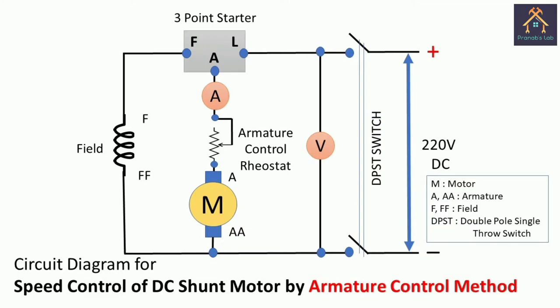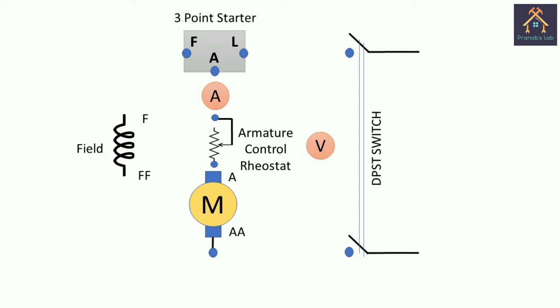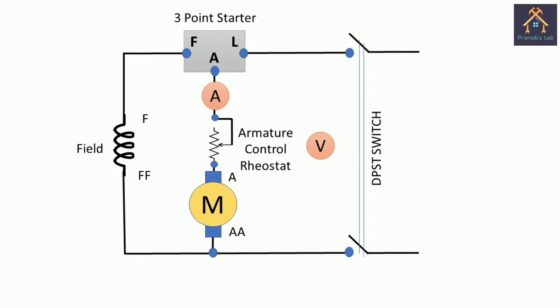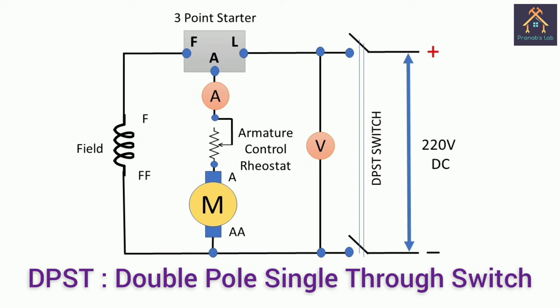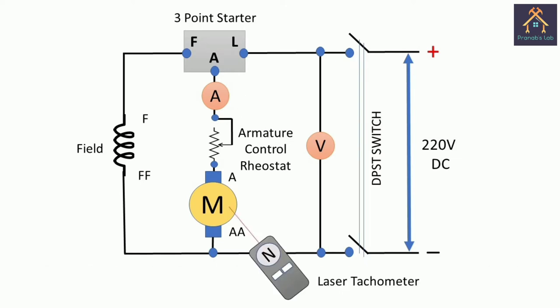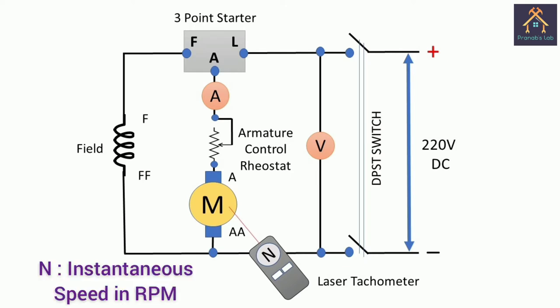Before performing the test, let's discuss the circuit diagram for the test. You can see the required circuit diagram. The L terminal of the stator is connected with the line positive. Then, the A terminal is connected with armature terminal A through the ammeter and armature control rheostat. The F terminal of the stator is connected with field terminal F. The double F and double A terminals are shorted and connected with supply negative terminal. We can connect a voltmeter to measure the supply voltage. A 220V DC supply is fed to the double pole single throw switch. The ammeter will read the current through the armature and a non-contact type laser tachometer will read the instantaneous speed of the motor.